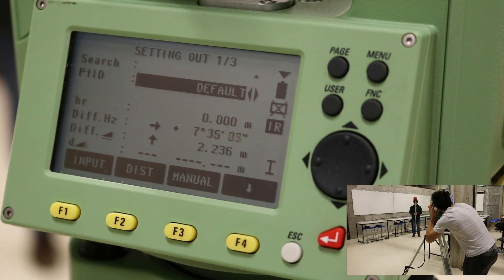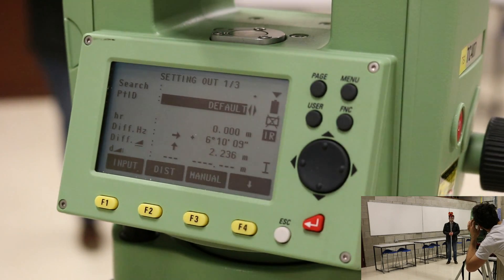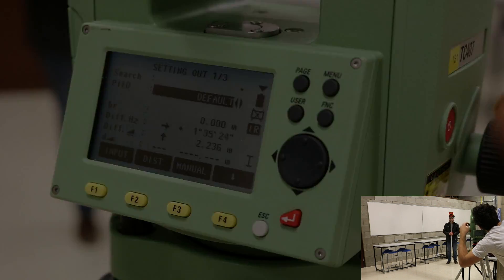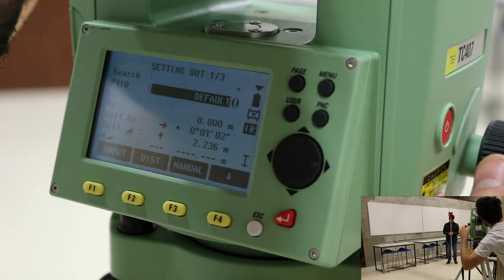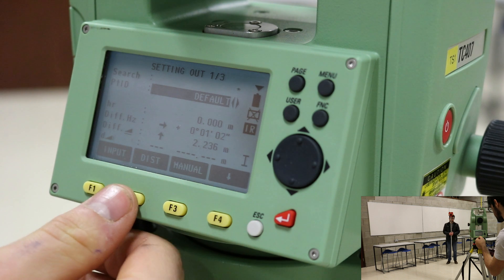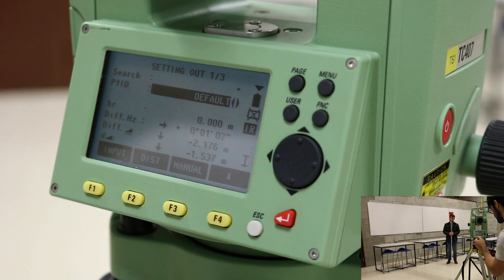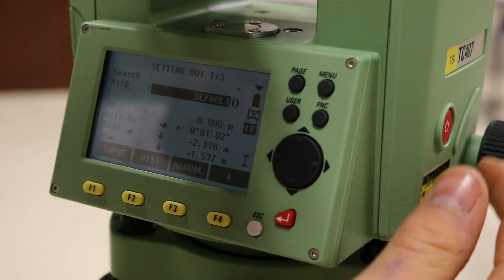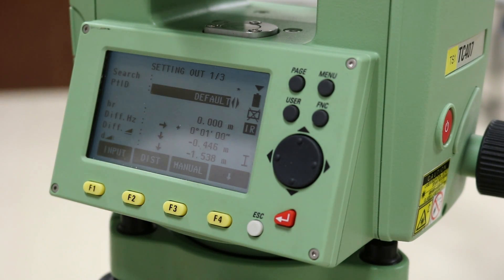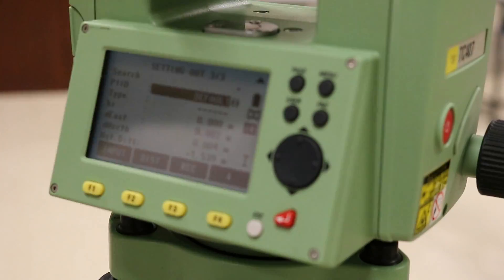Either way, once you have the coordinates entered, you rotate the station until the difference in horizontal angle is approximately zero. The prism should be placed in the direction of the station's laser. It is important to note that the point of interest is along the line the total station is directed. Shoot at the prism using the distance function. The total station should then indicate how far back or forward the prism should be moved to be positioned directly above the desired point.